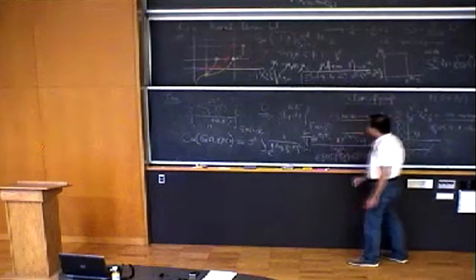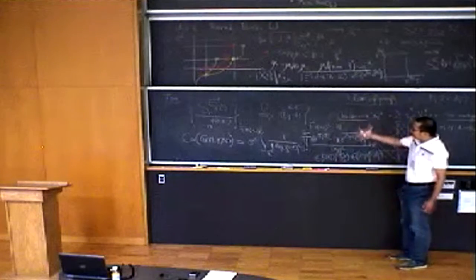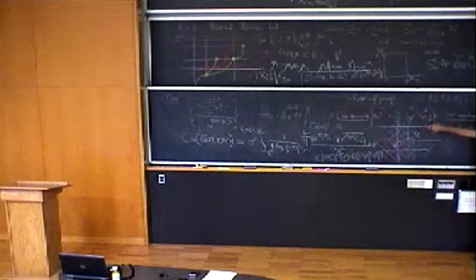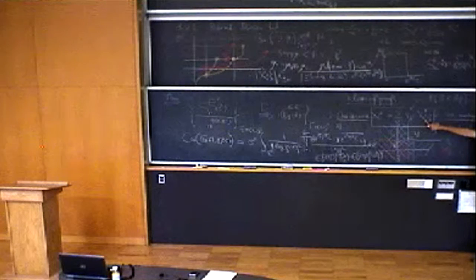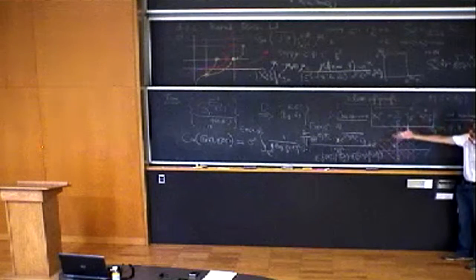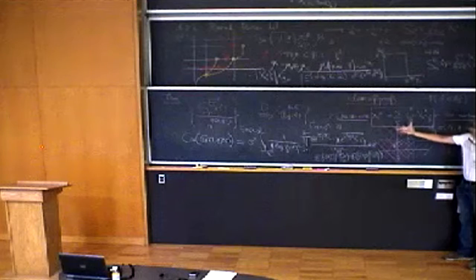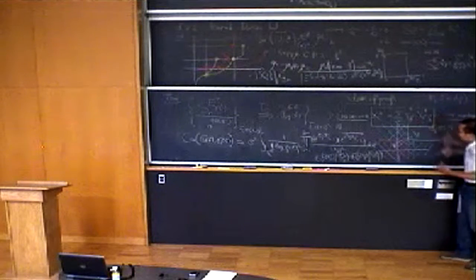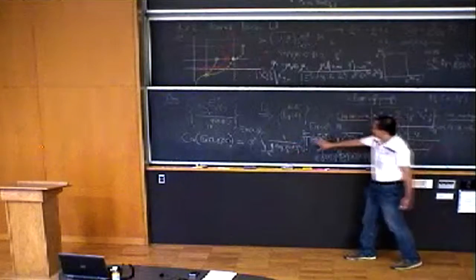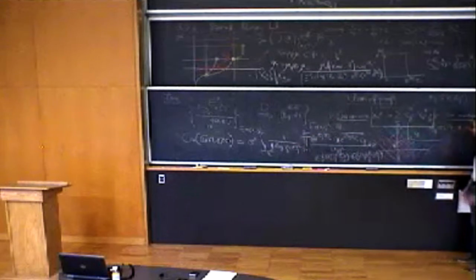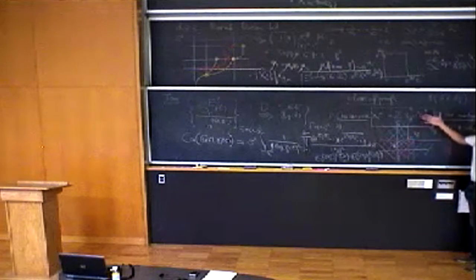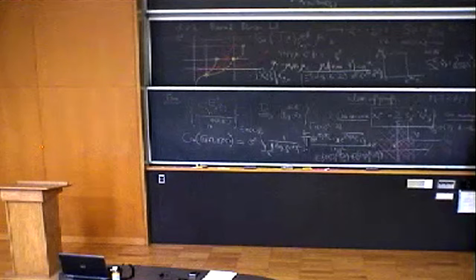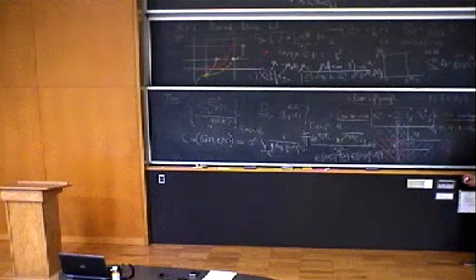The second part of the proof is: once you have this martingale difference structure, these guys are uncorrelated, and you want to prove the invariance principle by computing the covariance. The calculation of the covariance is essentially the calculation of the Q_j's, which we know pretty well. The formula depends on both E and E prime, and there are many calculations to carry out. The key point is that in this representation, you just work out coefficients, which makes the problem much easier to handle.